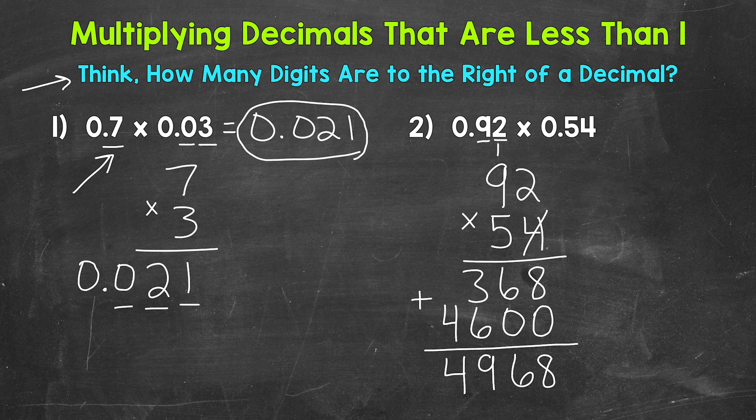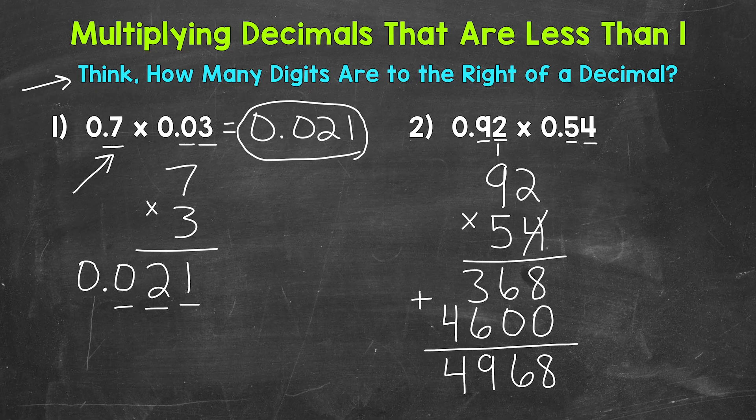So 1, 2, 3, 4. So our answer needs 4 digits to the right of the decimal. 1, 2, 3, 4. So we can place our decimal right here.